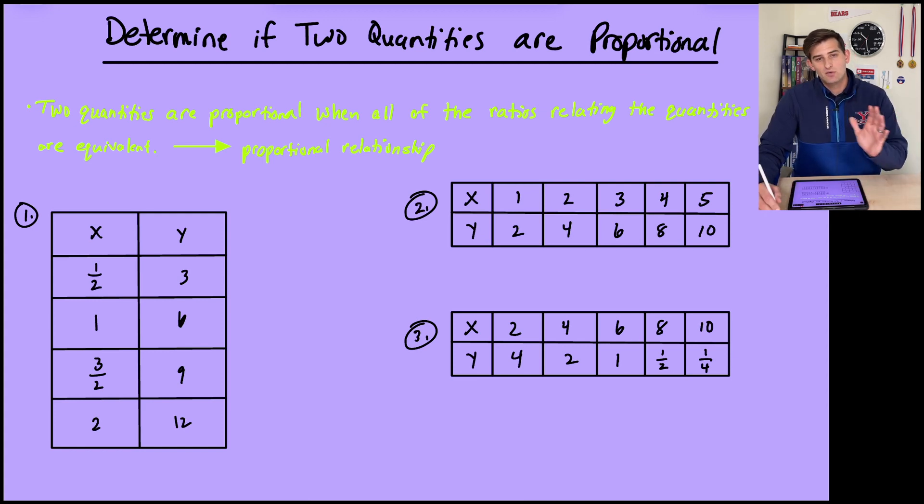So this is going to kind of segue into when we start talking about linear functions later on in pre-algebra and into algebra 1, and you'll talk about what a proportional graph or a proportional relationship looks like. And when you do that, you'll start talking a little bit about slope and how to find the slope of a line. And you'll quickly realize that slope is the change in y divided by the change in x.